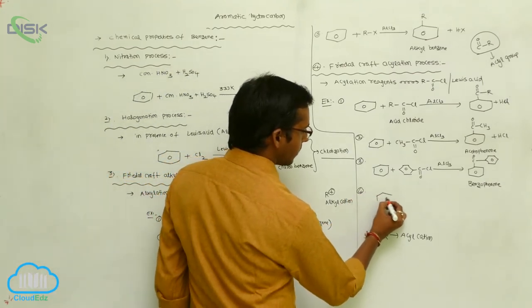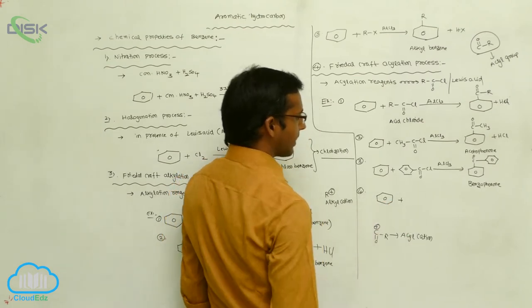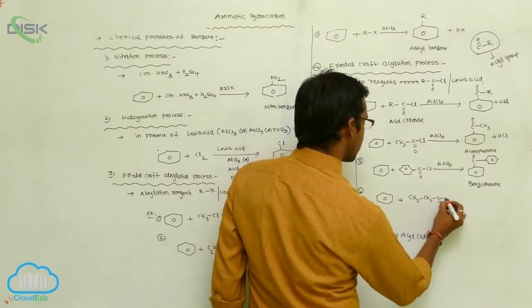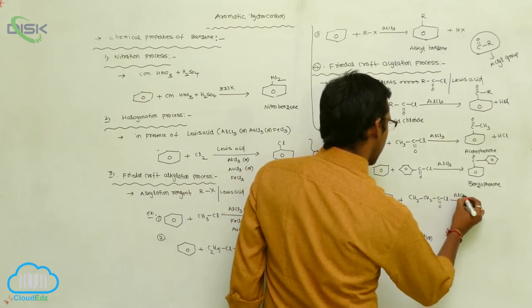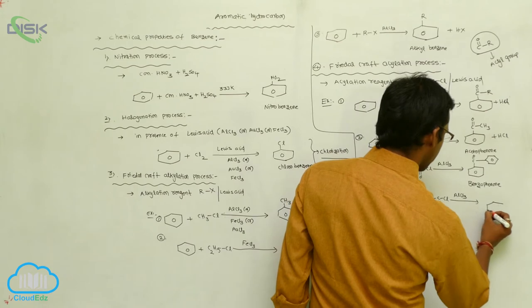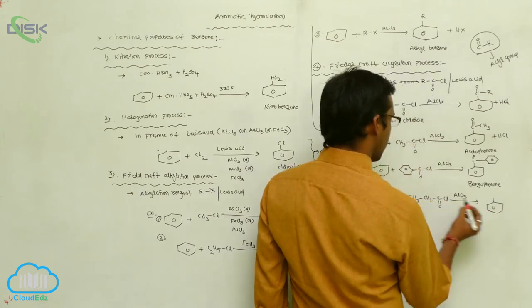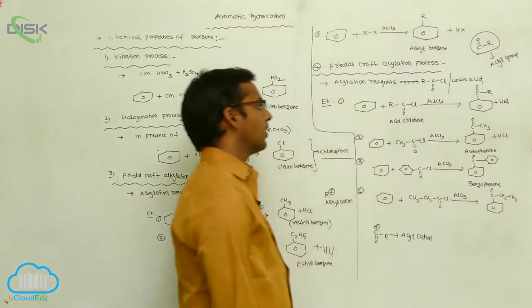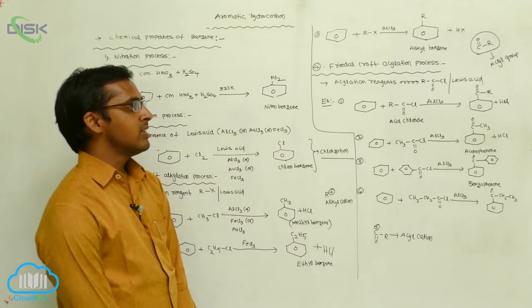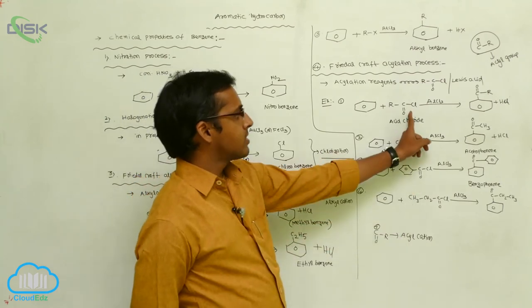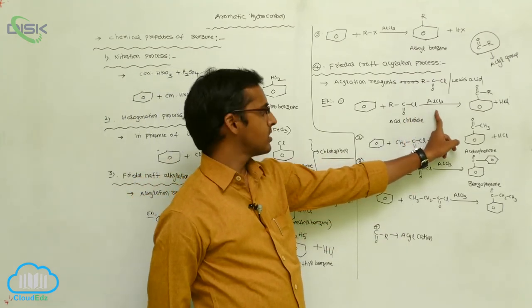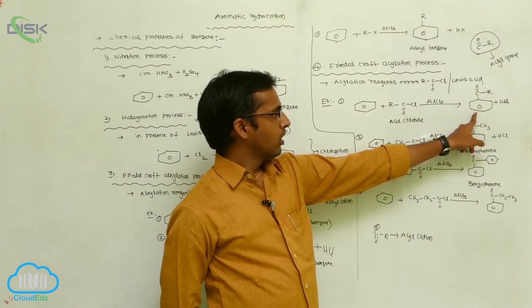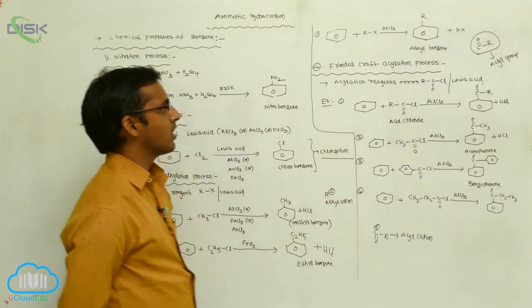Another example: benzene is reacted with CH3CH2C(=O)Cl (propanoyl chloride) in the presence of Lewis acid. The acyl cation is formed as an intermediate. Such reactions where an acyl group is introduced on benzene in the presence of acid chloride and Lewis acid are called Friedel-Crafts acylation processes.